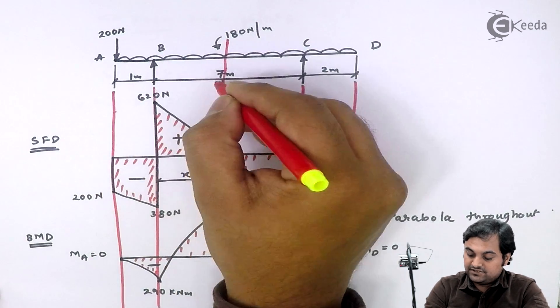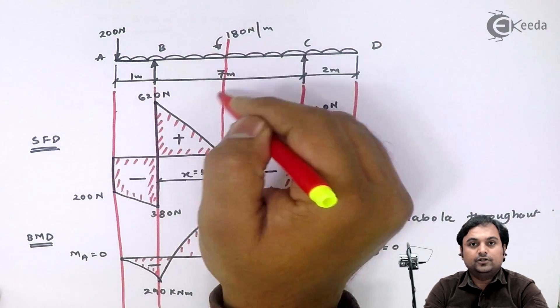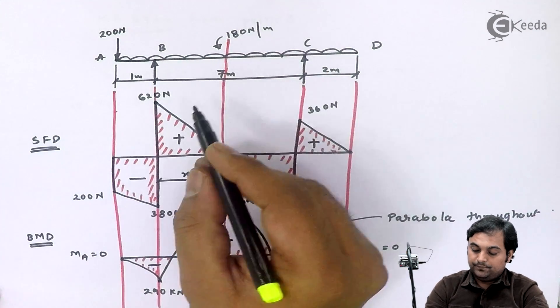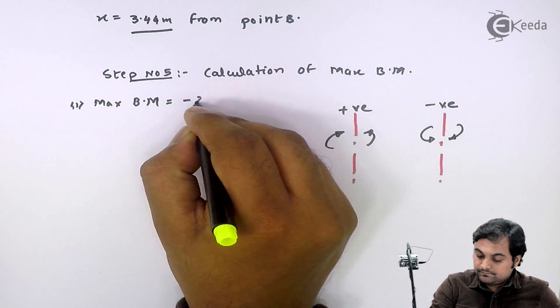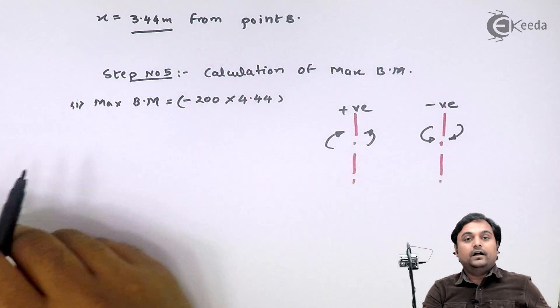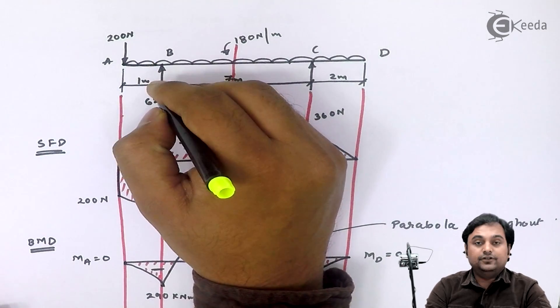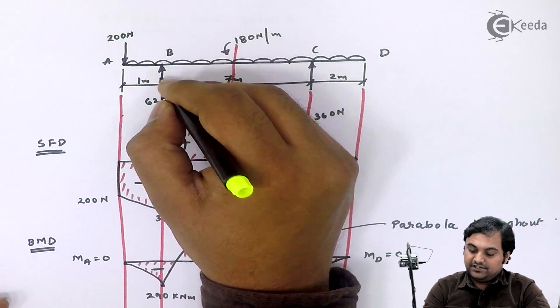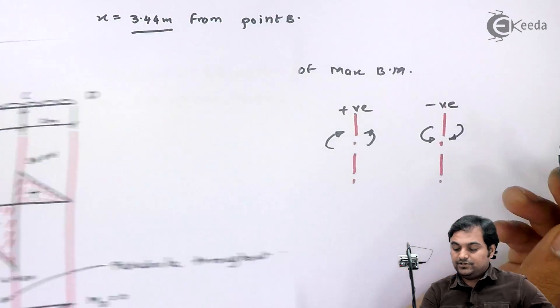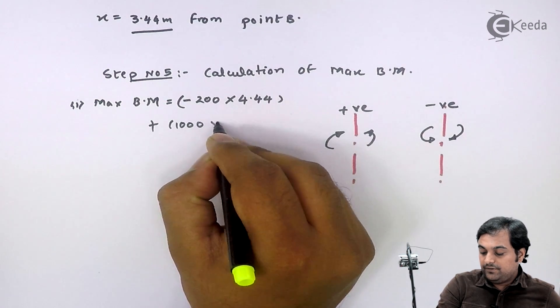1 plus 3.44, that is 4.44. If I take the moment, it is coming in anticlockwise direction, so that is negative. Minus 200 into 4.44. And here I have reaction at B, whose value was 1000. Reaction at B, if I am taking here, the distance is 3.44, so it is plus 1000 into 3.44.